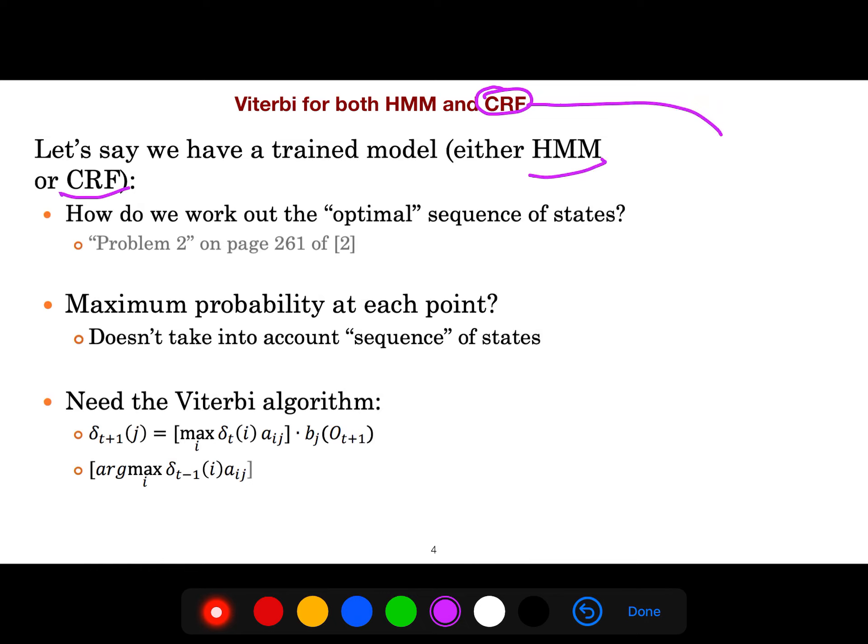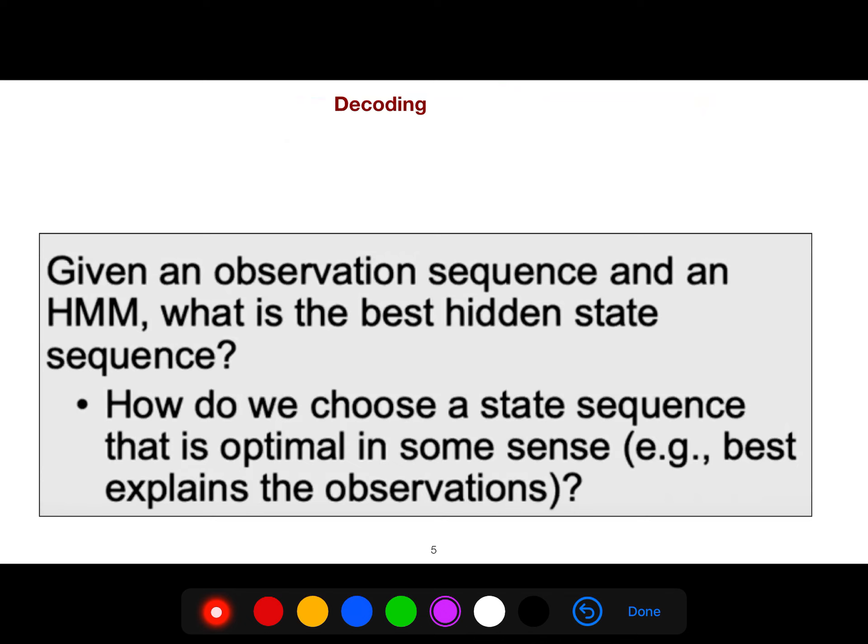What is the maximum probability at each point? We need the Viterbi algorithm, this data structure. And this is just the back pointers. Given an observation sequence and hidden Markov model, it doesn't matter. You're using forever. We can use it for everything. What is the best hidden state sequence? How do we choose a state sequence that is optimal in the sense that it best explains the observations?